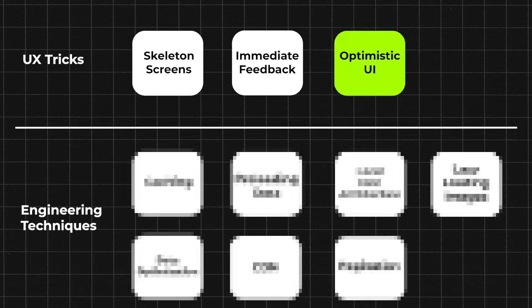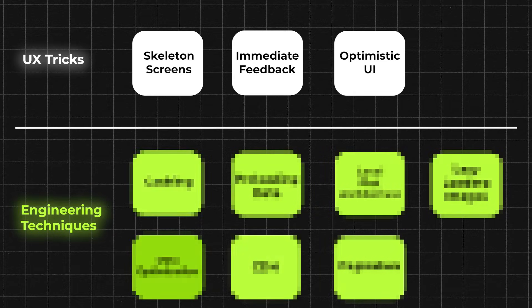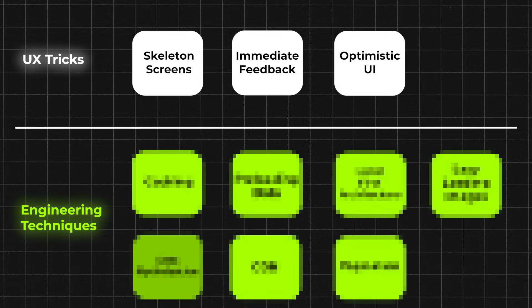Trick number three: optimistic UI. This is when we perform the user's desired action before it's actually done. For example, when you hit the like button on most social media apps, it's filled up before the API call is actually sent. This gives the user the illusion that the action was done instantaneously, when in reality it's still in progress. To actually make your app faster, you can use more advanced engineering techniques — they are all essentially ways to optimize data flow, since data loading is our main bottleneck.